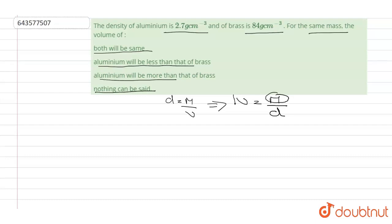Let's assume we take a mass of 10 grams for both elements. So volume of aluminium will be 10 upon 2.7, which equals 3.7 centimeter cube.